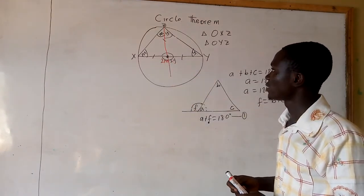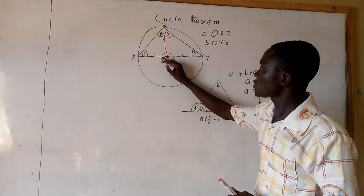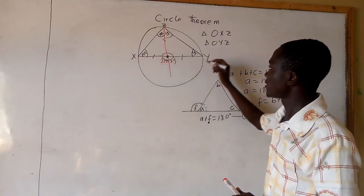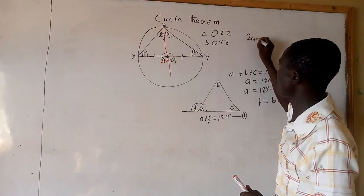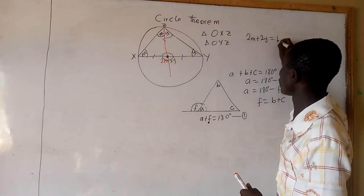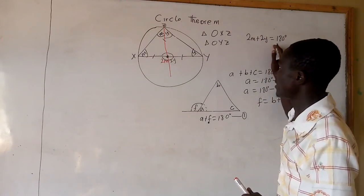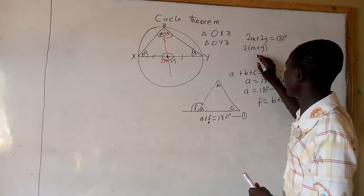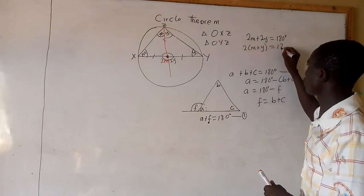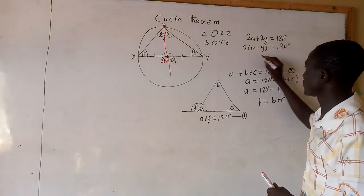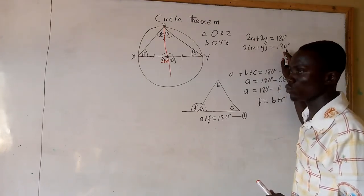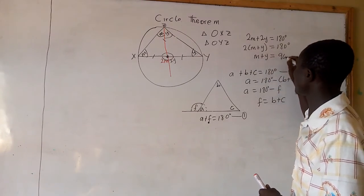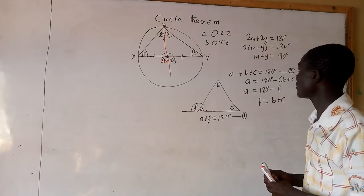Now, the angle here is 180 degrees. So we are going to have 2M plus 2Y equal to 180 degrees. If we factorize 2 out, we are going to have 2 times in two brackets, M plus Y equal to 180 degrees. If we divide both sides by 2, M plus Y equal to 90 degrees.